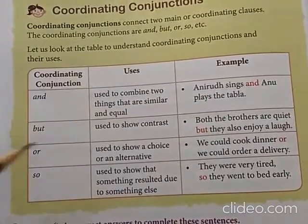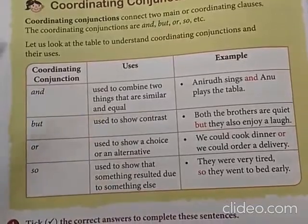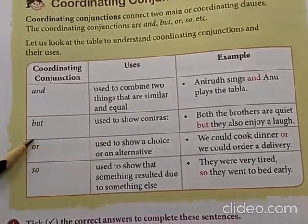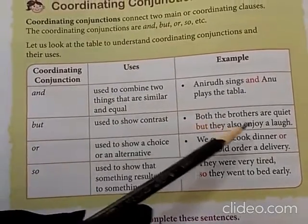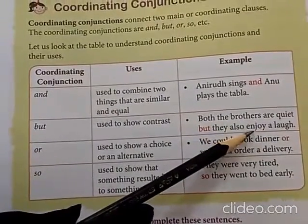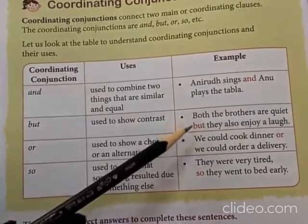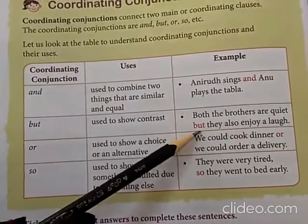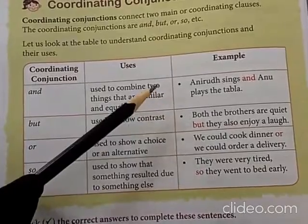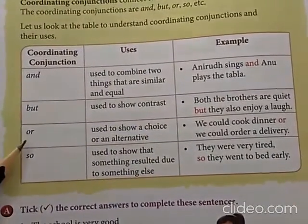Then we have 'but'. 'But' is used to show contrast — to join contrasting sentences. For example: Both the brothers are quiet, but they also enjoy a laugh. These two are contrasting sentences. In order to join them, we use the coordinating conjunction 'but' to make one sentence.